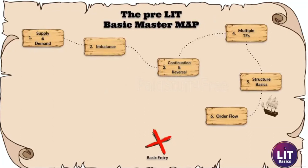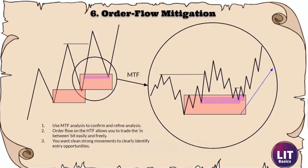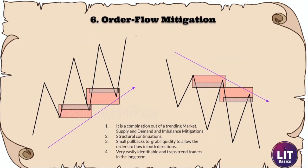A lot of smart money traders will already know about this, but let's cover what order flow is. Basically, order flow is present in a trending market with consecutive mitigations — going back to supply and demand combined with imbalance mitigations to get refined mitigations. It's just small pullbacks to grab liquidity and allow order to flow in both directions. Very easy to identify and very good for trapping people.